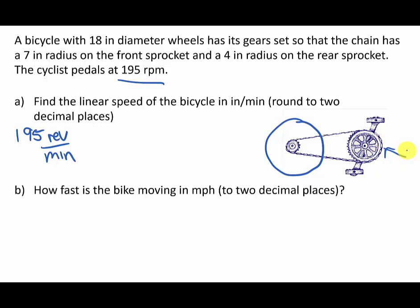This gear right here has a radius, that front sprocket's radius is 7. This little rear sprocket's radius was 4, and then the radius of the wheel itself, well it tells us the diameter of the wheel is 18, so this radius is 9.